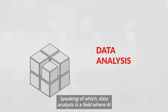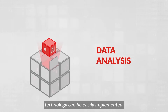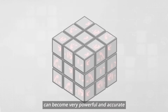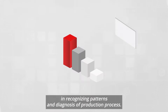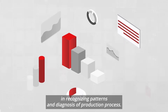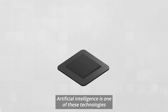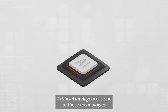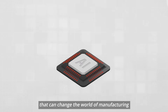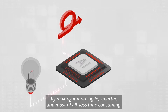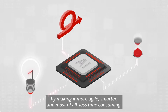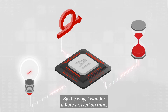Speaking of which, data analysis is a field where AI technology can be easily implemented. Data science using AI can become very powerful and accurate in recognizing patterns and diagnosis of production processes. Artificial intelligence is one of these technologies that can change the world of manufacturing by making it more agile, smarter, and most of all, less time consuming.